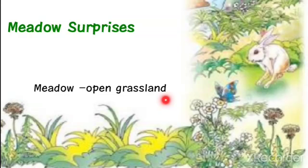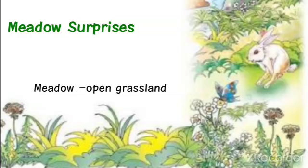Before we start our poem, I'd like to give you a short summary. In this poem, we will learn about the open grassland. The poet tells us that there are many surprises for us, but the charm of beauty can be noticed only by people with a keen eye and a sharp ear. If you observe very clearly, only then can you see and hear each and every voice from this open grassland.